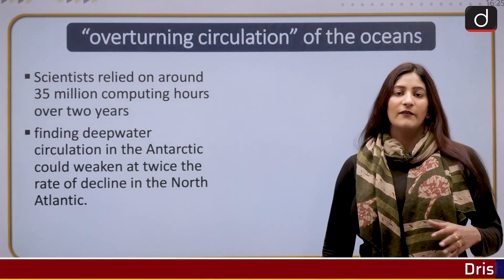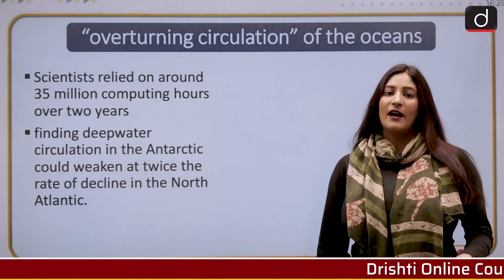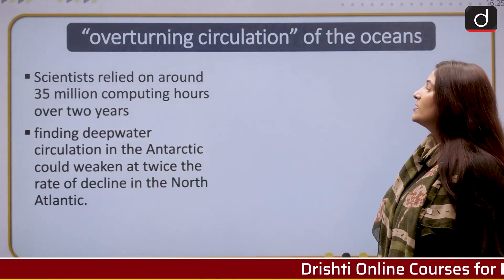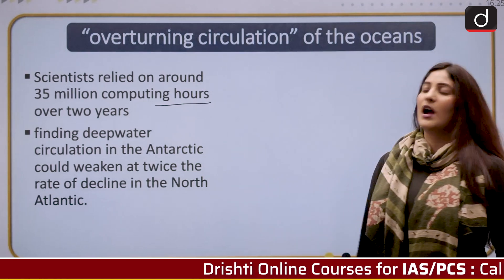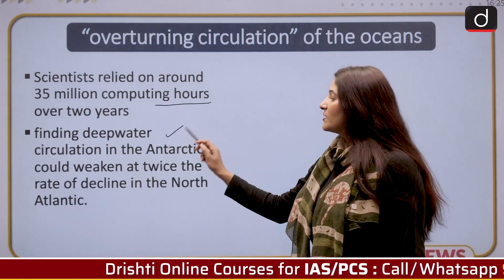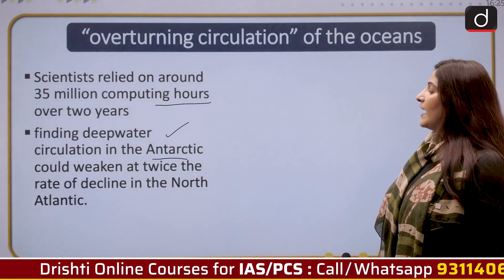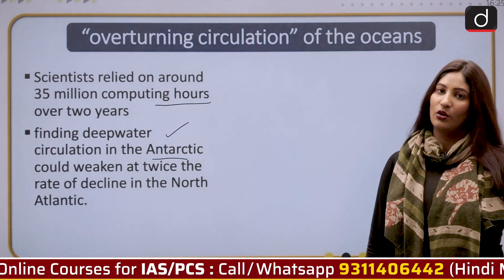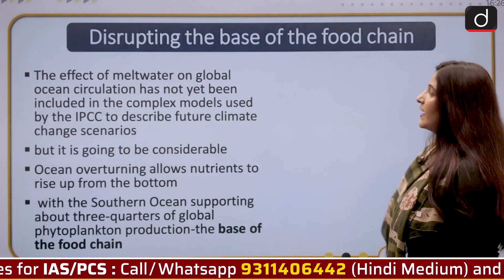Scientists reached this conclusion by relying on around 35 million computing hours over two years. They found deep water circulation in the Antarctic could weaken at twice the rate of decline in the North Atlantic, which is not very good news moving ahead.